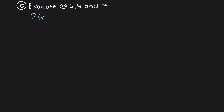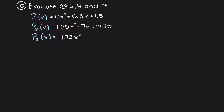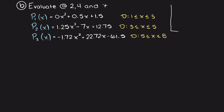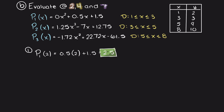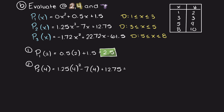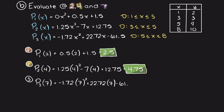Now, back on our blackboard, we can begin solving the second question. We were asked to evaluate the interpolating polynomials at inputs of 2, 4, and 7. For an input of 2, we use our first interpolating polynomial based on our domains, which results in an output of 2.5. For an input of 4, that falls in the domain of our second polynomial, resulting in an output of 4.75. Lastly, for an input of 7, we use our third interpolating polynomial, which results in an output of 13.15. We have now answered all the questions we were asked.